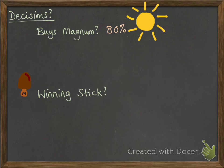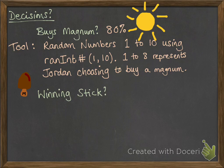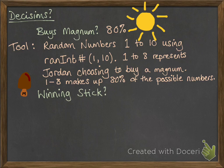We can use any kind of mathematical tool that's going to enable us to get this 80% figure. The easiest one is to look at generating random numbers. You can use your graphics calculator to generate random numbers 1 to 10 using the ranint function. We want numbers 1 to 8 to represent the situation where Jordan chooses to buy a magnum — 1 to 8 makes up 80% of the possible numbers, giving us the required probability.